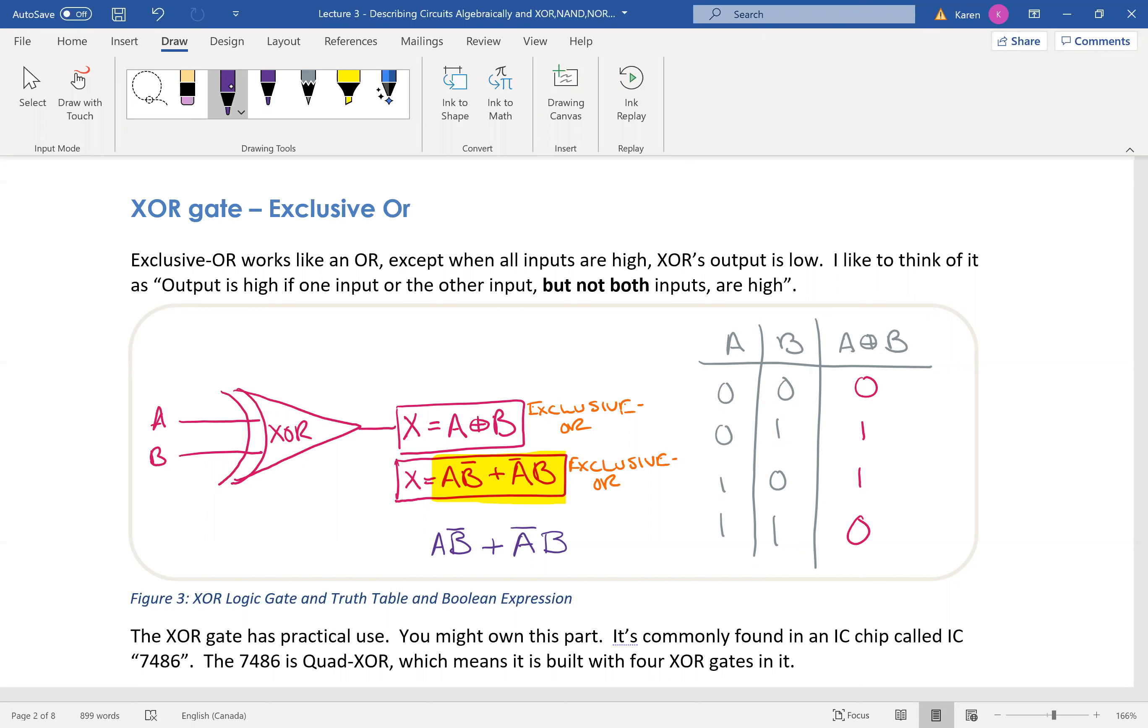So you could use your basic gates and you could make this. This is a popular combination and it's called exclusive OR. We write it as this: A is exclusive ORed with B.